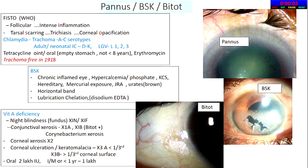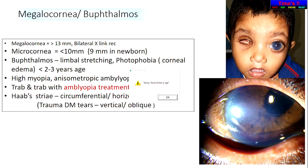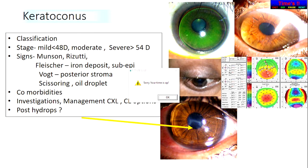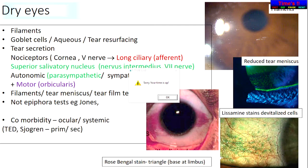These are must-know viva areas: BSK, Bitot's spots, Fisto classification, vitamin deficiency. For aniridia, it's a combined cornea and glaucoma case — tonometry is usually not possible, so do digital tension. In any glaucoma case, talk about amblyopia treatment. Keratoconus is a must — know the staining, fit pattern, types of contact lens, how the fit changes post Hydrops, and collagen cross-linking. Dry eyes will invariably come in the drug viva and as a spotter.